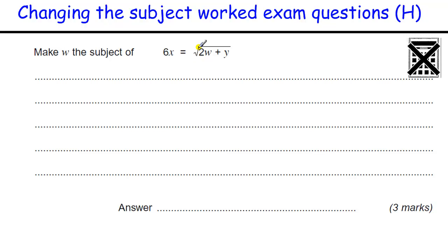Making W the subject, another one with a sort of square in it, this is actually the square root, and we want to make W underneath the square root, so to get rid of the square root we need to square it. So we need to square both sides, and it's quite tricky because 6X all squared is not 6X squared, it's 6 times 6 which is 36 X squared.